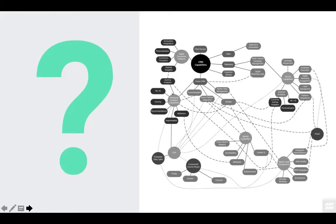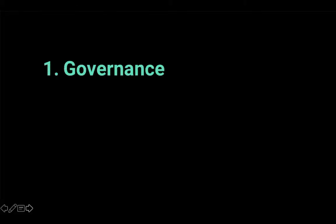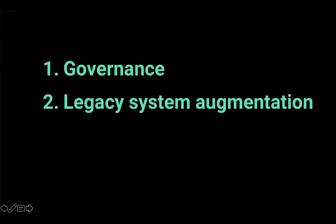The short answer is a customer data platform accelerates your enterprise architecture roadmap. For the core use cases of data integration and interoperability, you could think of a CDP as serving three broad purposes from an architectural standpoint. First is governance. Second, legacy system augmentation. And thirdly, agility.